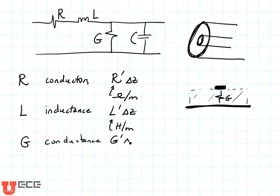The conductance is given in Mhos per meter, or 1 over ohm meters. It's really referring to how much leakage current you're going to have between your positive conductor and your negative conductor.